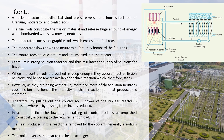When the control rods are pushed deep enough, they absorb most of the fission neutrons, so few are available for chain reaction, which therefore stops. However, as they are withdrawn, more and more fission neutrons cause further fission and the intensity of the chain reaction and heat production increases. By pulling out the control rods, the power of the nuclear reactor is increased.